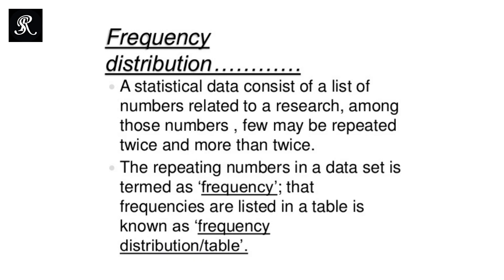Frequency distribution of statistical data consists of a list of numbers related to research. Among those numbers, few may be repeated twice and more than twice. Maybe if you have a data, later on in example you will have the idea that how the frequency or the observation in some classes repeated twice or more than twice. The repeating numbers in a data set is termed as frequency, that frequencies are listed in a table is known as frequency distribution or frequency table.